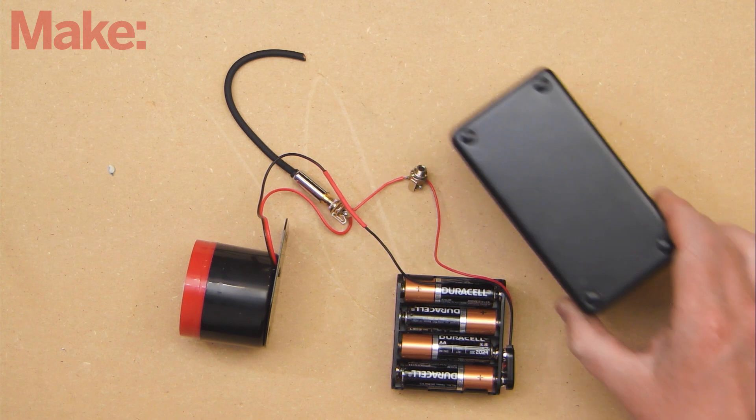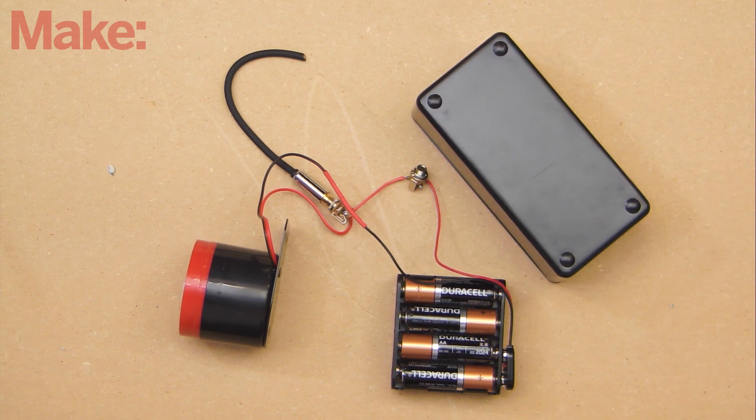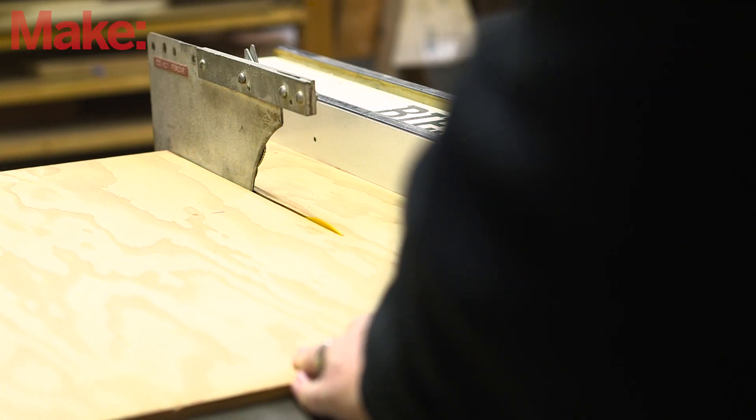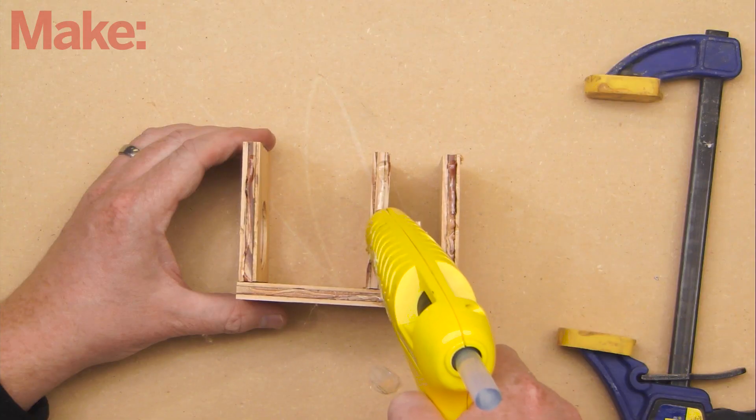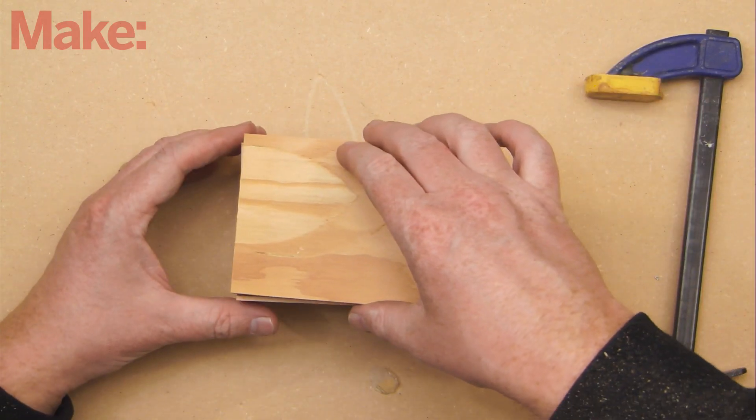The components in this build don't easily fit into any of the common sized electronics enclosures we found, so we'll be making our own out of scrap wood. You can use wood glue to join all the pieces together, but if you're in a hurry, hot glue will work just fine.